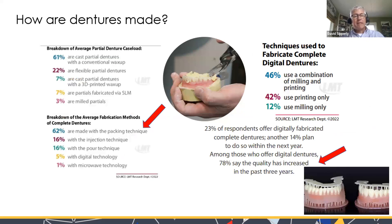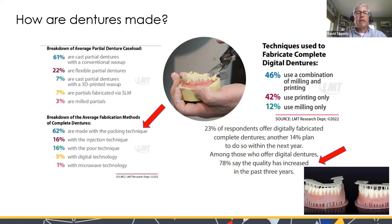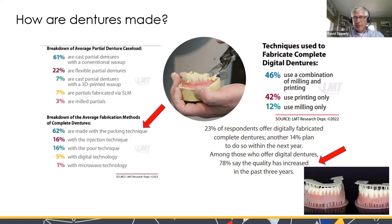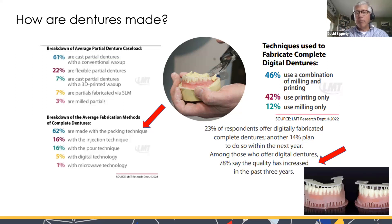We also have near double-digit growth in implant-supported dentures and over dentures. Looking at how dentures are made today, most labs still use the analog process — 62% still pack. Among those doing digital dentures, 46% combine milling and printing, 42% are printing only, and 12% are milling only.